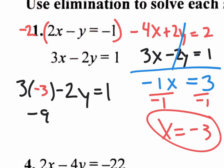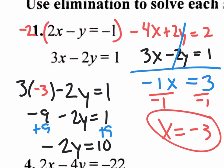I'll have negative 9 minus 2Y equals 1. And of course, you're going to add 9 to both sides. So you're going to end up with a negative 2Y equals 10, which means that Y equals negative 5. So your complete answer for number 1 is the coordinate negative 3 comma negative 5.